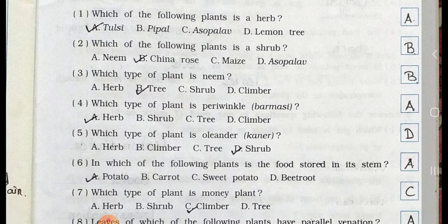Number 3. Which type of plant is a neem? A. Herb, B. Tree, C. Shrub, and D. Climber. Answer is option B. Tree.